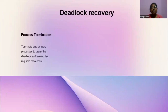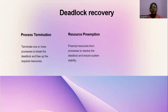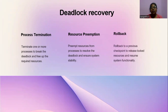Deadlock recovery. Process termination: terminate one or more processes to break the deadlock and free up the required resources — at a time there should not be more than one process. If we terminate one process after its work, there will be no problem of deadlocks, so we can free up the resources and other processes can proceed. Resource preemption: preempt resources from processes to resolve the deadlock and ensure system stability. Rollback: rollback to a previous checkpoint to release locked resources and restore system functionality. We need to check all the processors where the process is locked and resume there so that all processors can proceed.